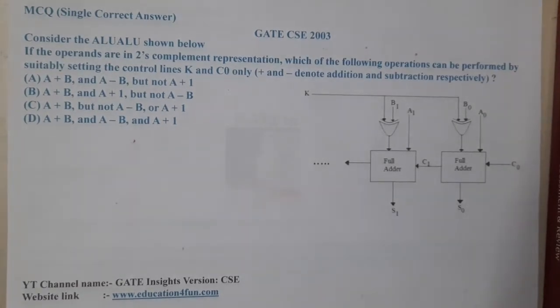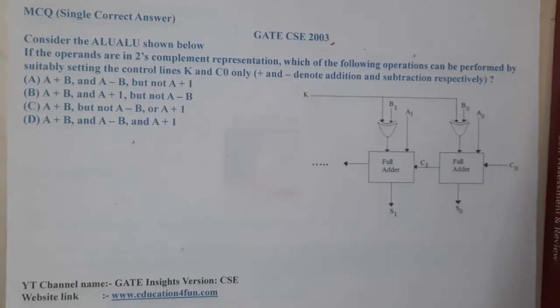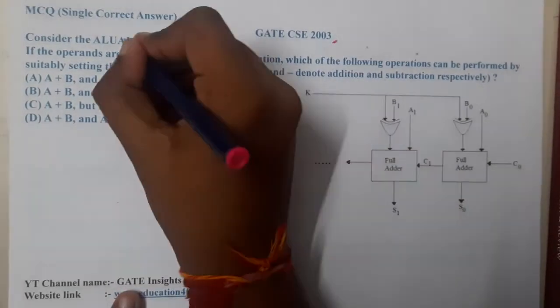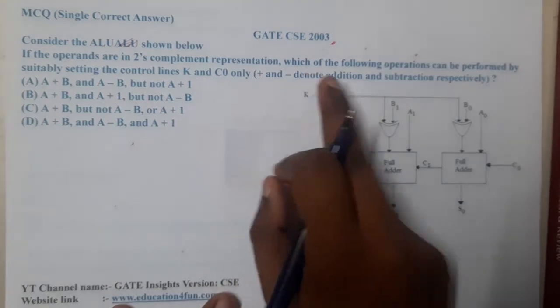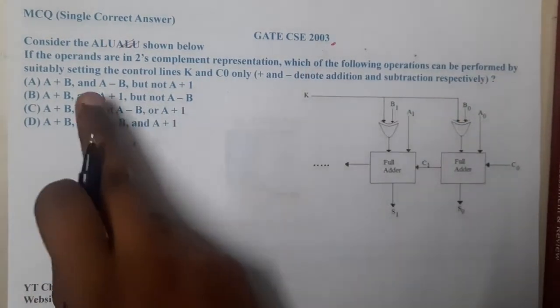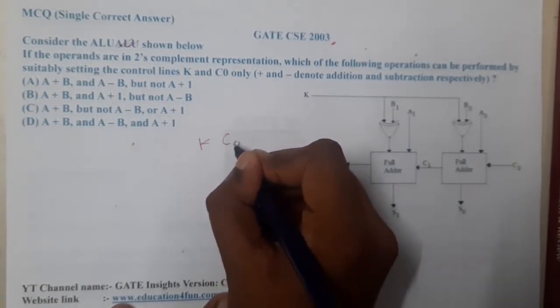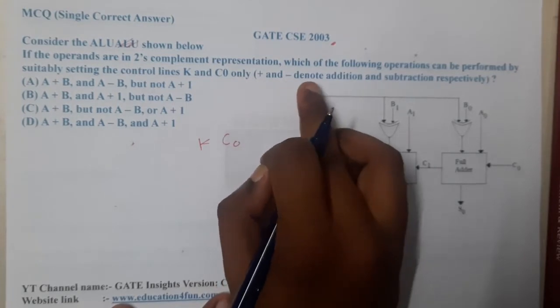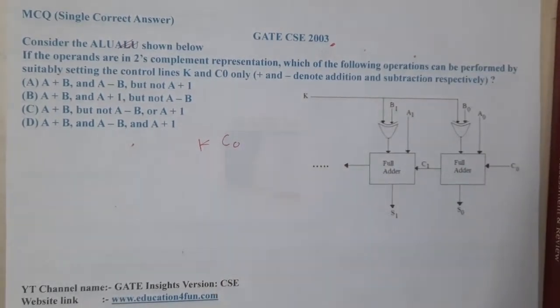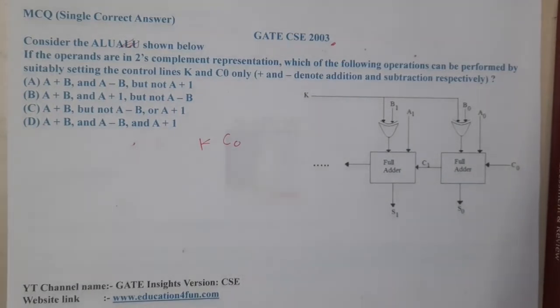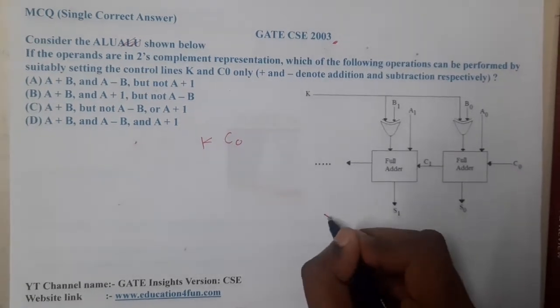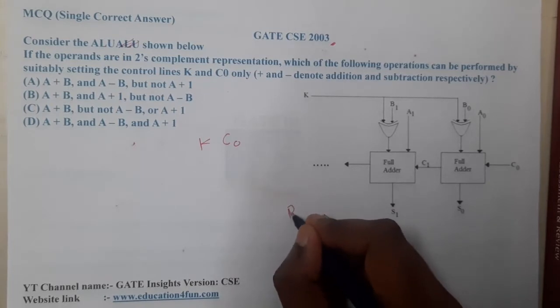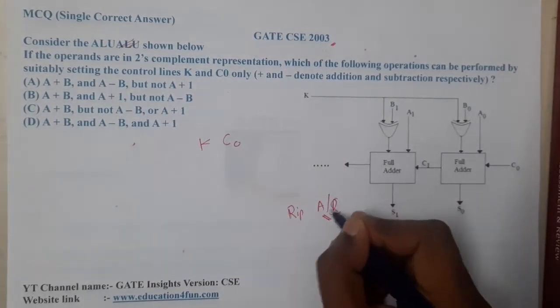Hello guys, we are back with our next lecture. This question belongs to GATE CSE 2003. The question is: consider the following ALU shown below. They gave a circuit. If the operands are in two's complement representation, which of the following operations can be performed by setting up the values of k and c₀? Plus and minus denote addition and subtraction respectively. So here, on the basis of k and c₀ values, what operations can we perform with the help of this circuit? I am 100% sure that most students have already recognized that this circuit diagram is nothing but a ripple adder and subtractor.